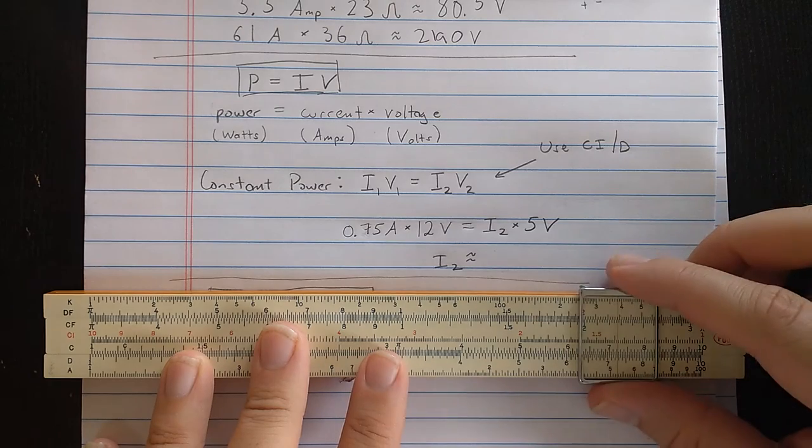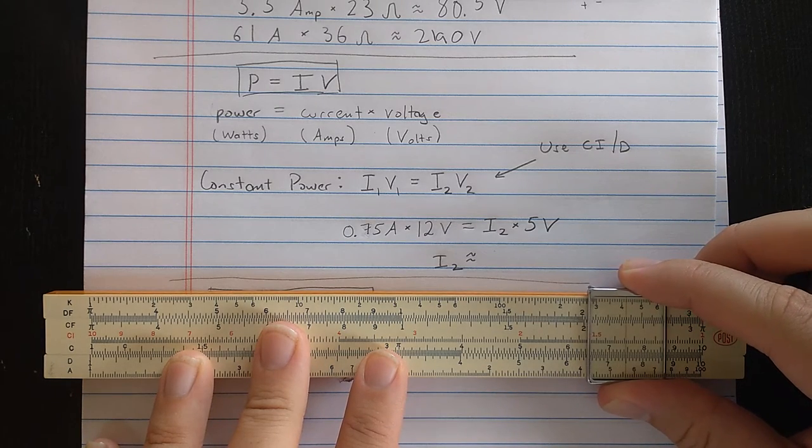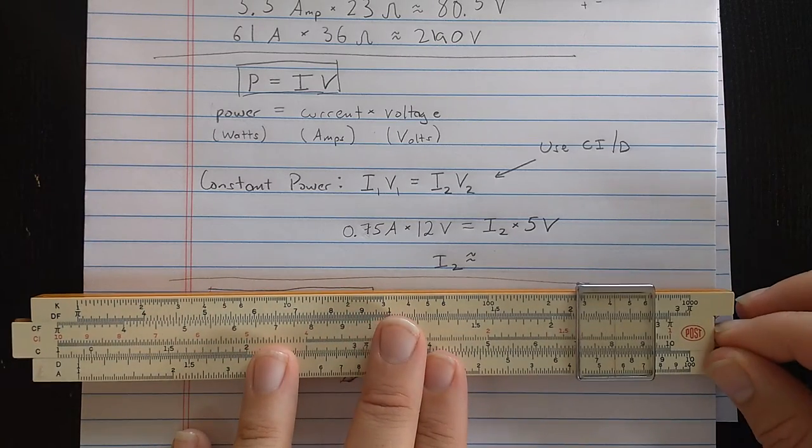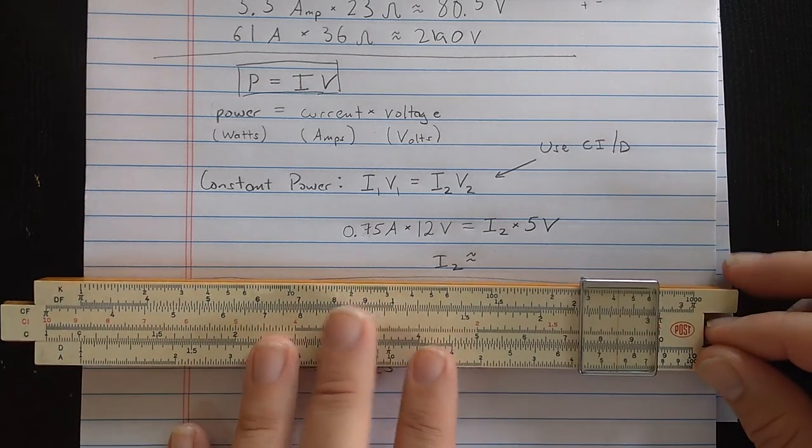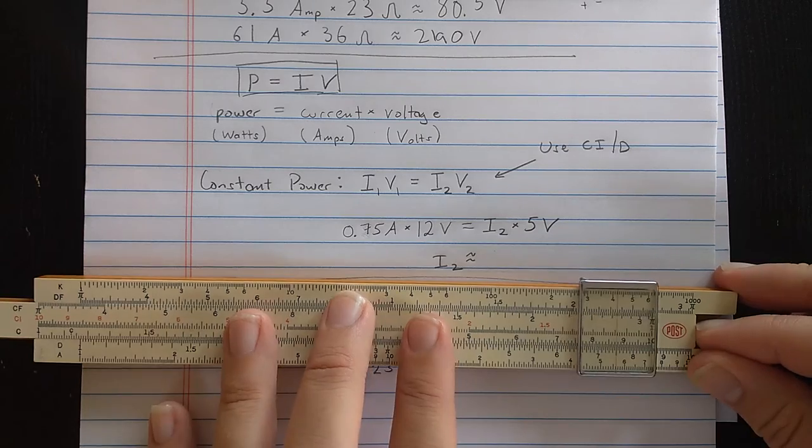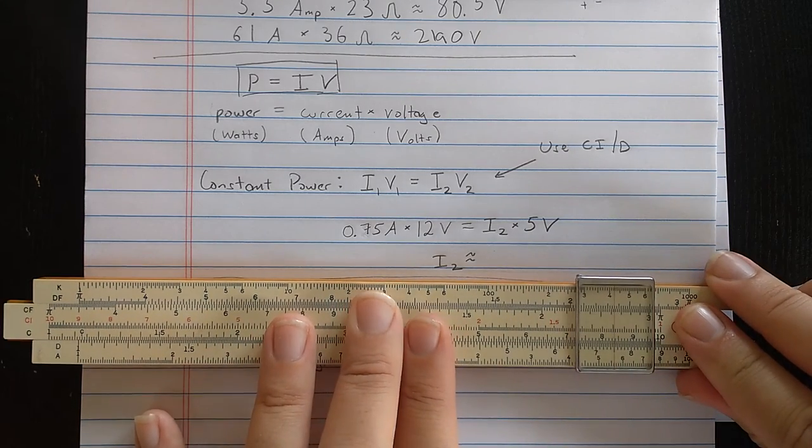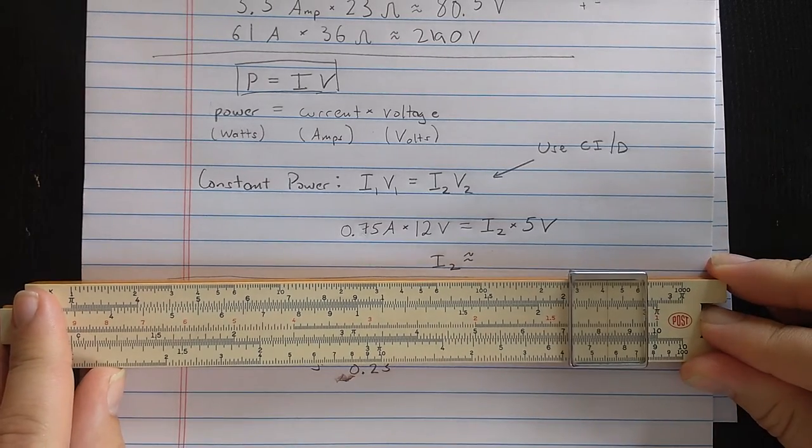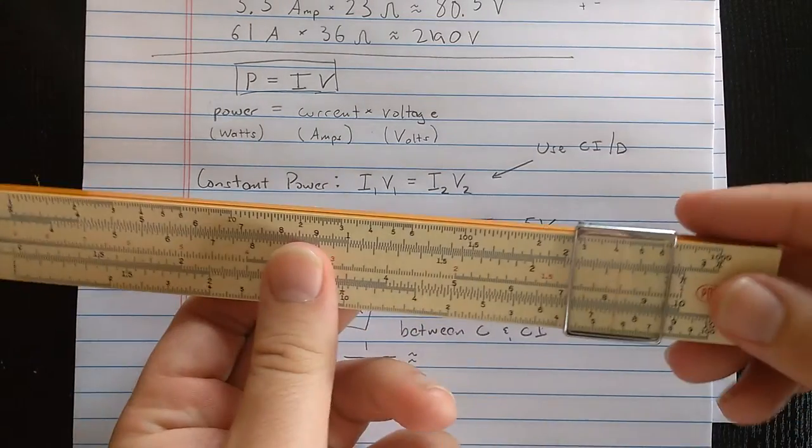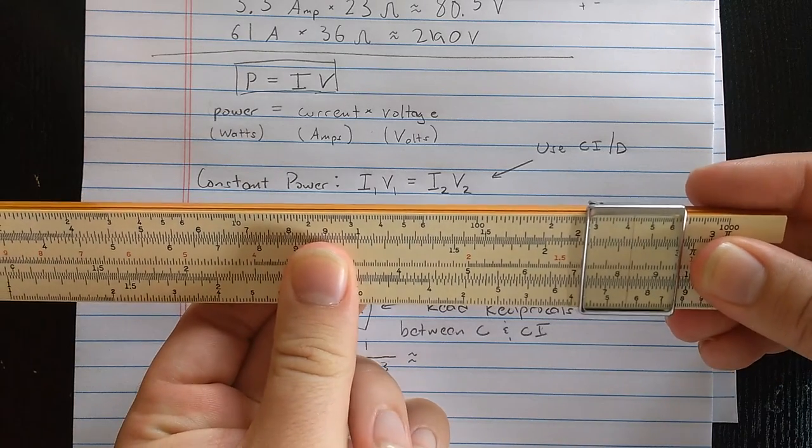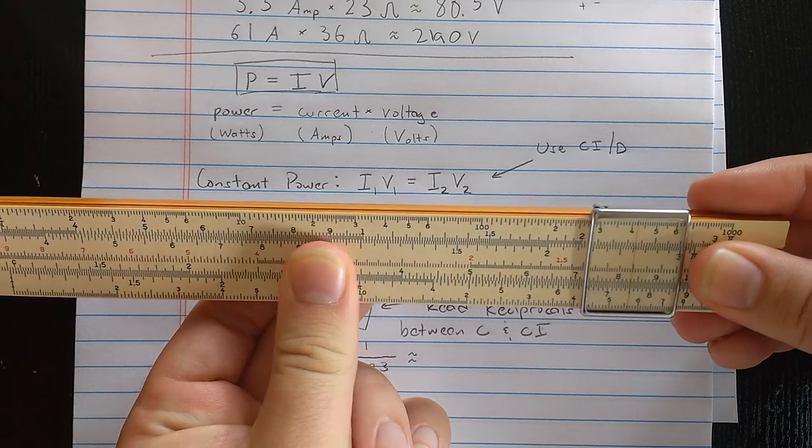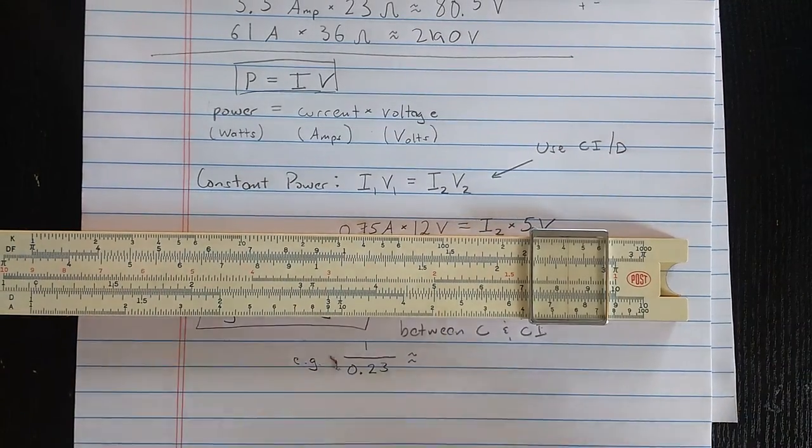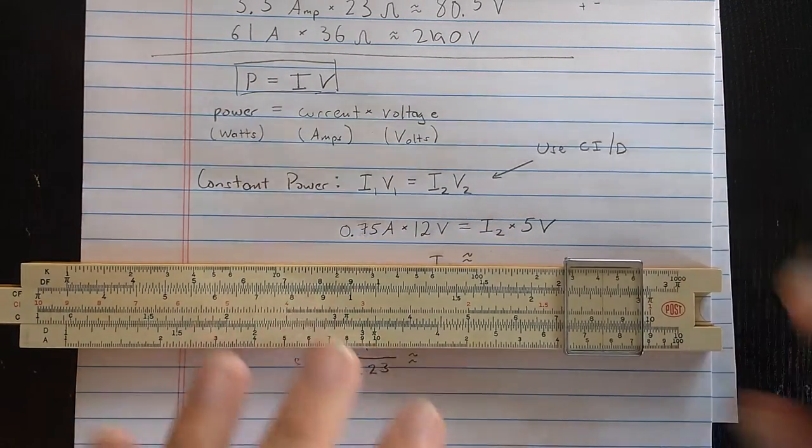So, what I will do is I'll find the 7.5 on the D scale, then the 12 volts on the CI scale. So, there's 1.2 on the CI scale.